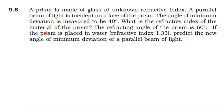From the topic Ray Optics and Optical Instruments. A prism is made of glass of unknown refractive index. A parallel beam of light is incident on a face of the prism. The angle of minimum deviation is measured to be 40 degrees. What is the refractive index of the material of the prism? The refracting angle of the prism is 60 degrees. If the prism is placed in water with refractive index 1.33, predict the new angle of minimum deviation of a parallel beam of light.